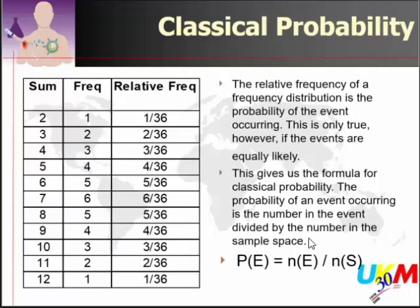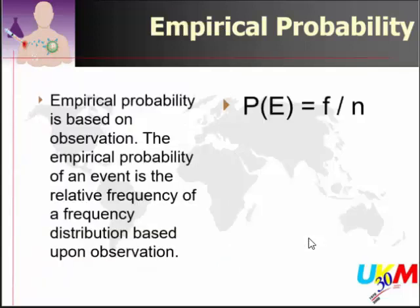Looking at the frequency, the number 7 is the most frequent — 6 out of 36. This gives you the formula for classical probability: 6 over 36. The theory is that the probability of an event occurring is the number of favourable outcomes divided by the total number of possible outcomes. That is the basic probability formula.